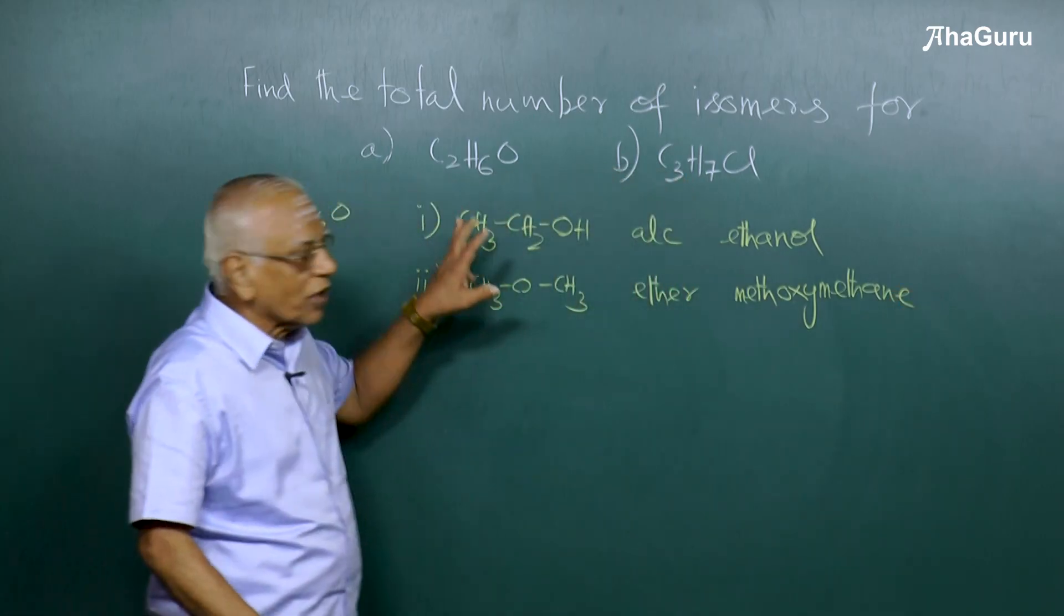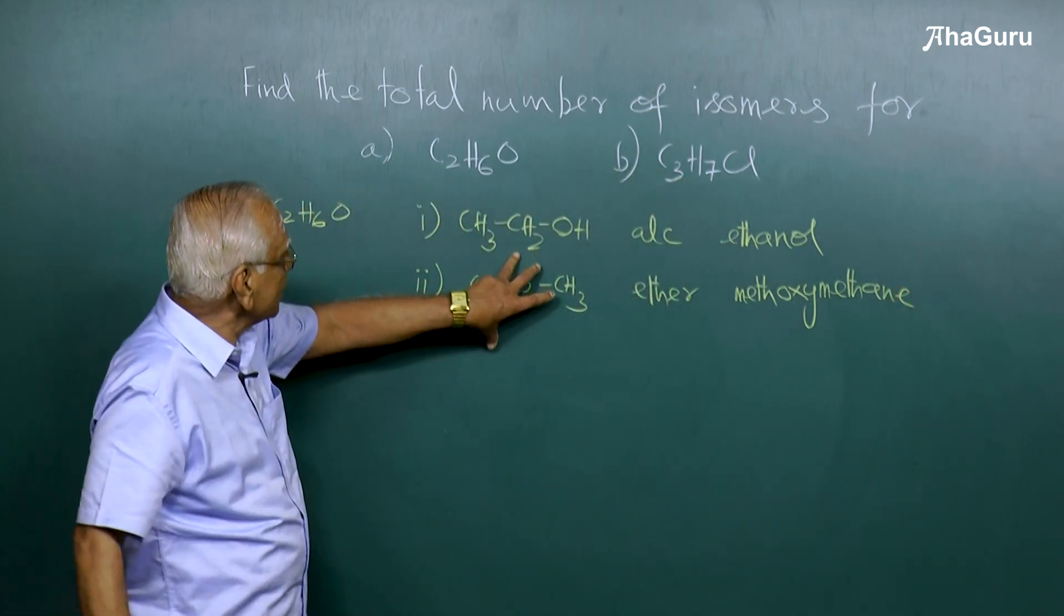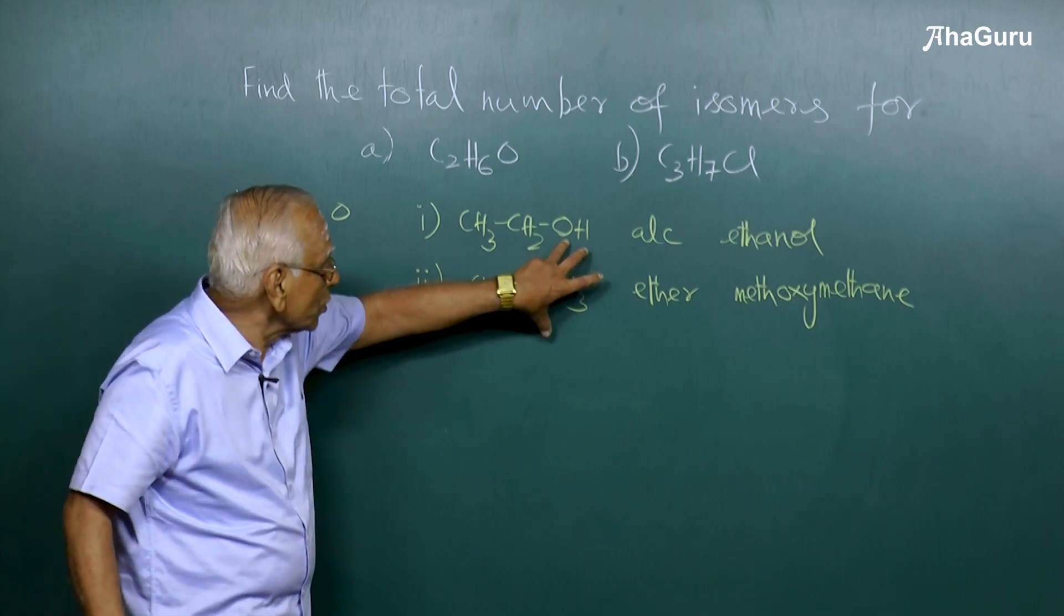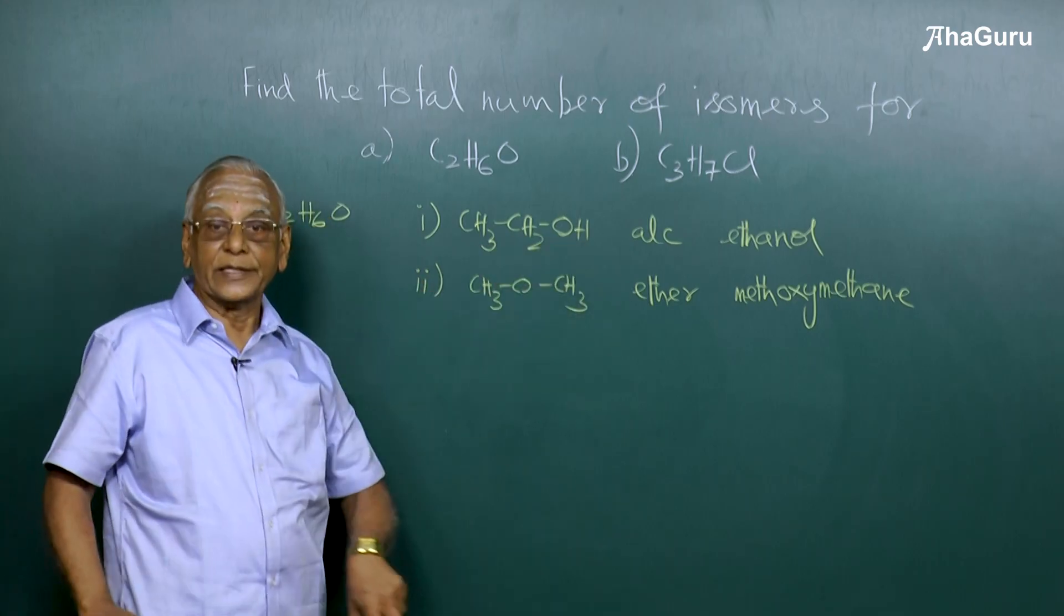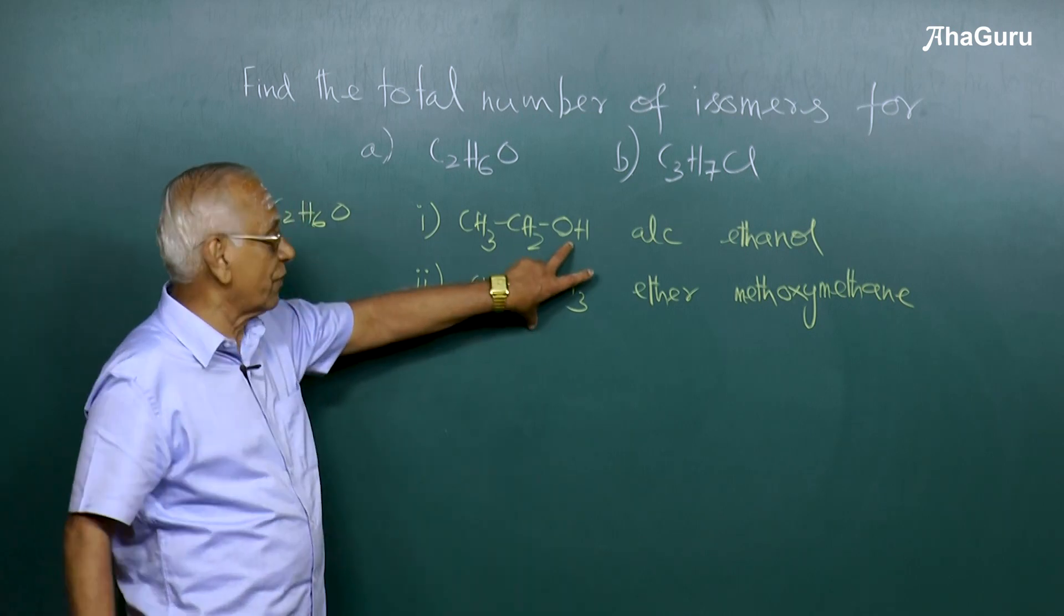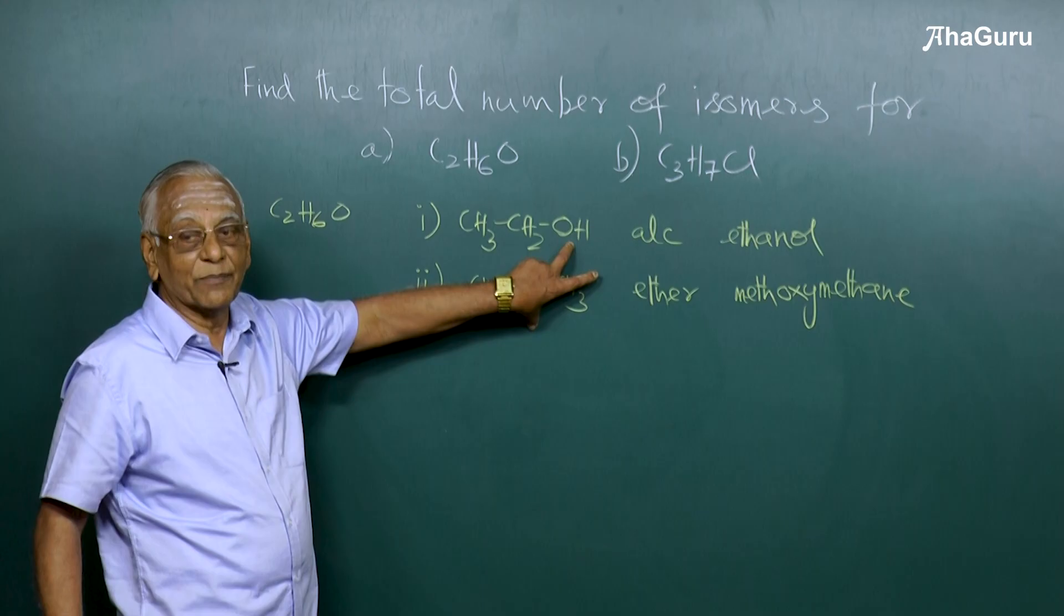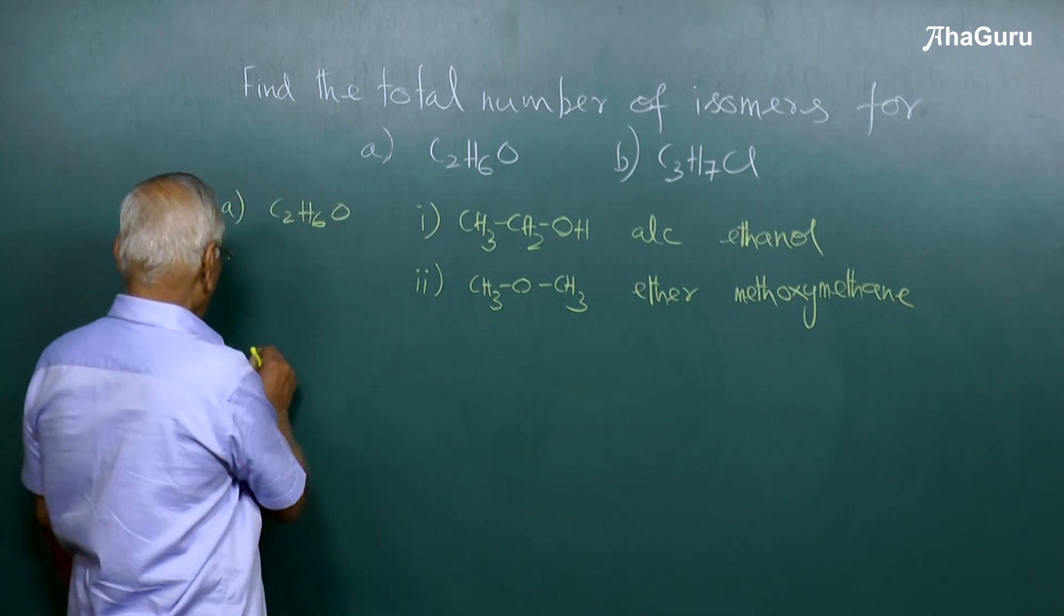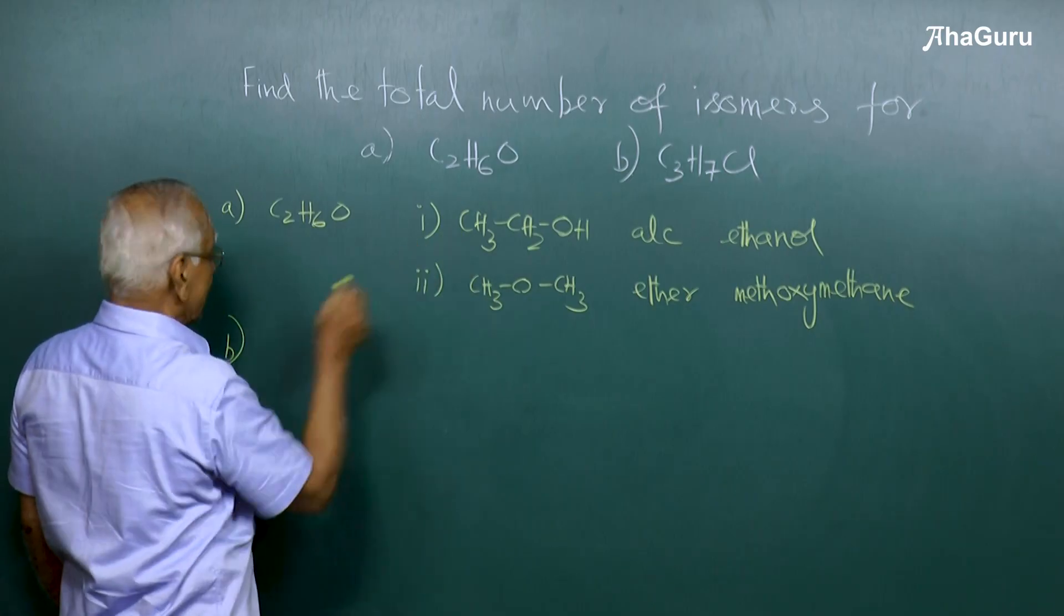Look at these two components, my dear students. They have the same molecular formula with different structures owing to the different functional groups. These molecules have the same molecular formula with different functional groups, and they are examples of functional isomers—functional isomerism.